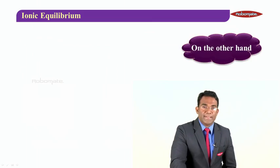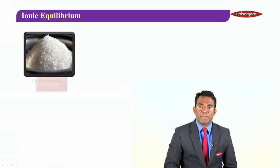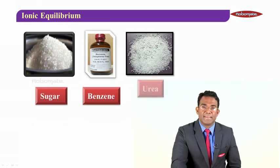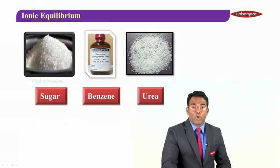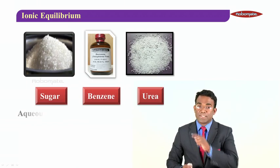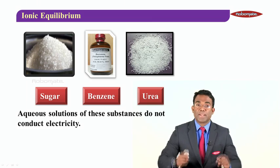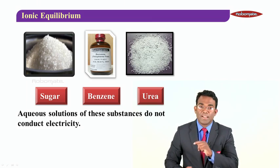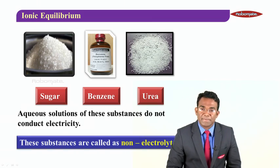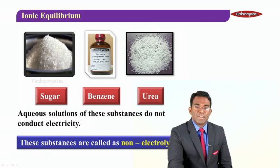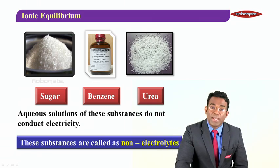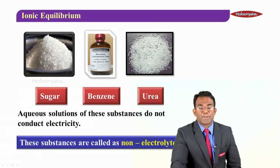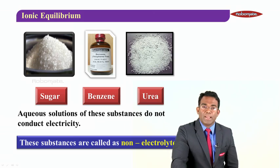On the other hand, if you look at these examples on your screen — sugar, benzene, and urea — if I take the aqueous solution of these substances, you'll notice that on trying to pass electricity through them, the solutions do not conduct electricity. These substances are called non-electrolytes.